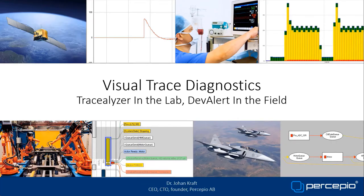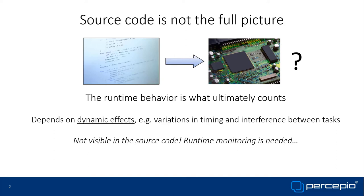My name is Johan Kraft. I'm CEO, CTO, and founder of Percepio. Most embedded software is written in C or C++, but these languages do not completely specify the runtime behavior, and the runtime behavior is what ultimately counts. The static source code is fundamental, but does not give the full picture, since the runtime behavior also depends on dynamic effects — for instance, variations in timing and interference between tasks or threads.